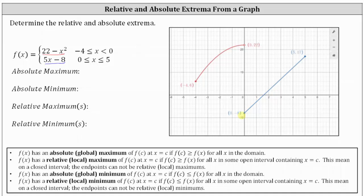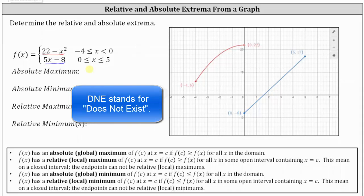Now let's determine whether the function has any absolute extrema, meaning an absolute max or an absolute min. To determine the absolute max, we want the highest point on the graph. The highest point would be this open point, but because this point is open, the function value does not exist there — it's actually down where the function value is negative 8. Because we cannot identify the highest point, an absolute max does not exist and we enter DNE.